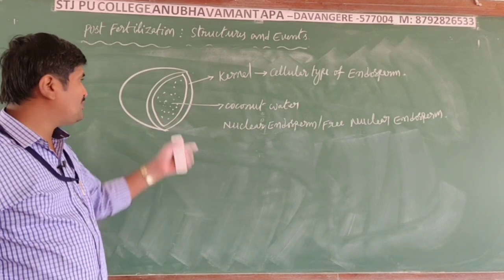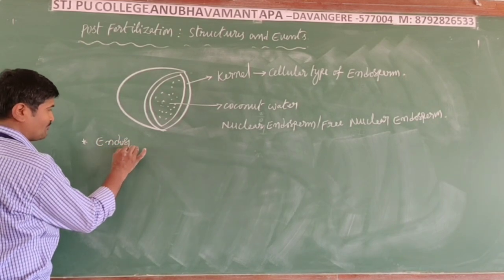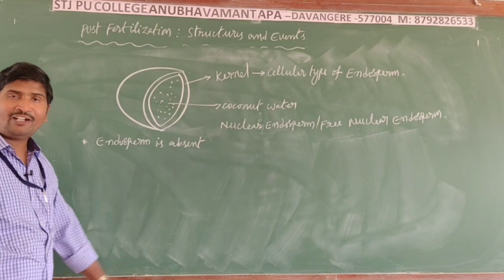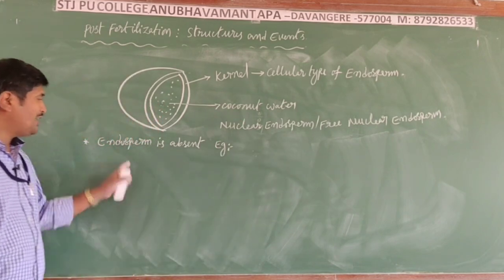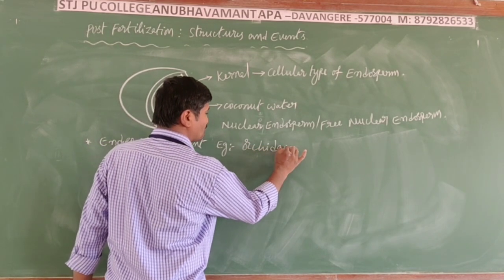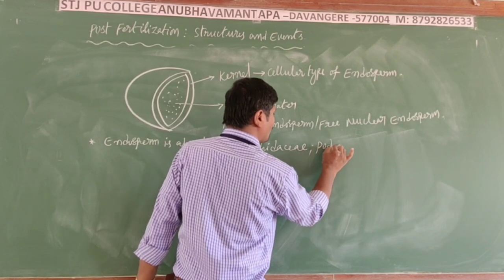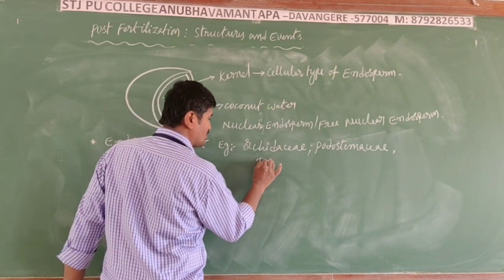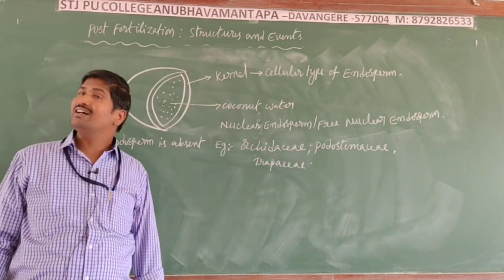Special points about endosperm: First, the endosperm is completely absent in some angiosperms. The families in which endosperm is absent are Orchidaceae (a monocotyledon family), Podostemonaceae, and Trapaceae.